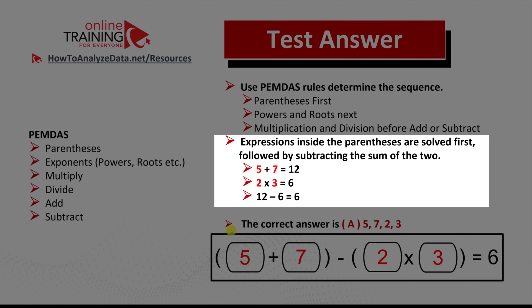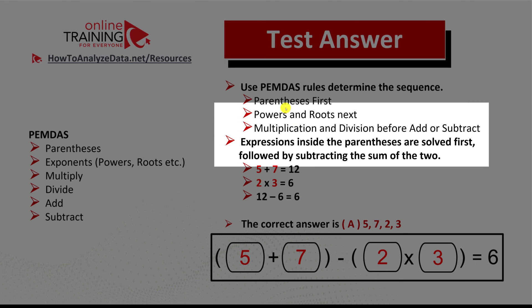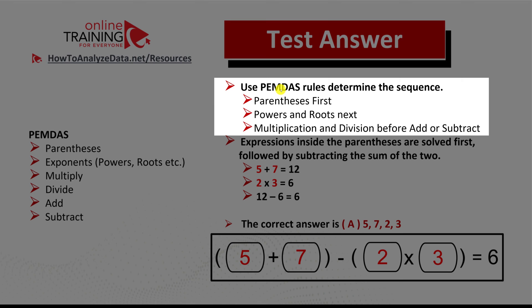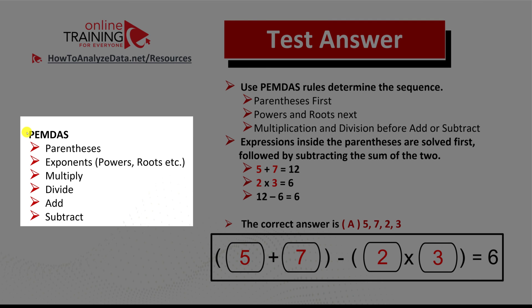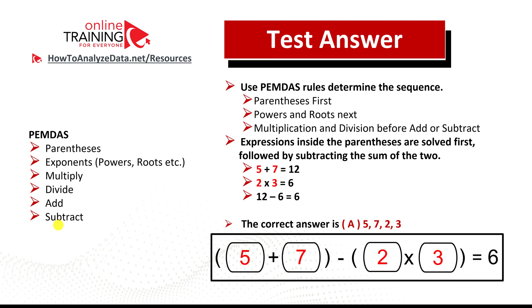Let's verify choice A: five plus seven equals twelve, two multiplied by three equals six, twelve minus six equals six. Hopefully you've nailed this question. Remember the keyword PEMDAS, which stands for parentheses first, powers and roots next, multiplication and division before addition and subtraction. PEMDAS represents the first characters of: Parentheses, Exponents, Multiplication, Division, Addition, and Subtraction — the order of operations.